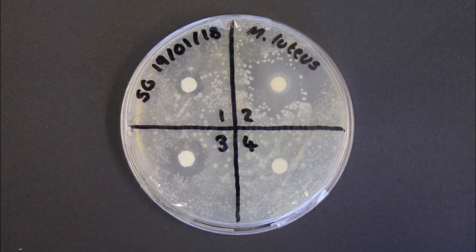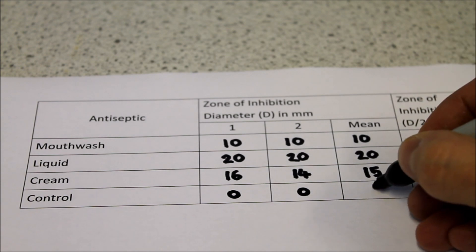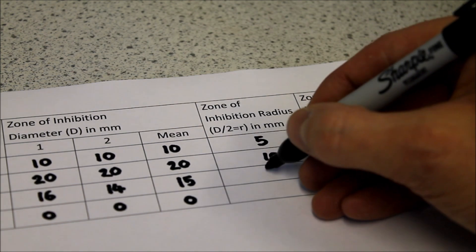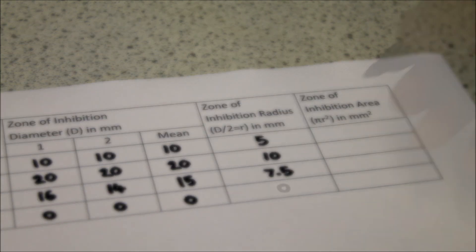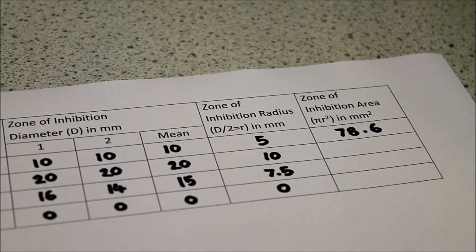The control has not stopped the bacteria growing at all so there is nothing to measure. We then halve the diameter to find the radius and calculate the area of each zone of inhibition using the formula pi r squared.